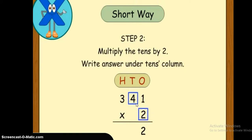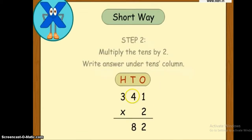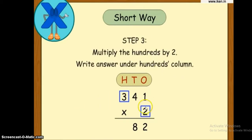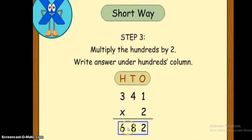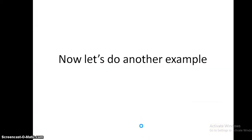Two times four equals eight. We are going to write the answer under the tens column. Then we are going to multiply two by the hundreds. The hundreds here is 3, so two times three equals six. We are going to write the answer under the hundreds column. So the product of 341 by two is 682.